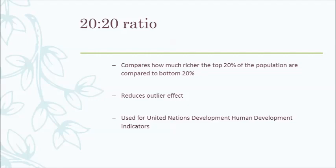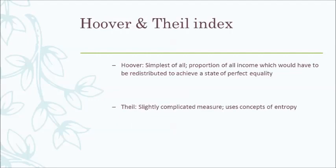One example can be shown from Japan and Sweden, which have a very low inequality gap, where the richest 20% earned only about 4 times that of the poorest 20%. In the UK the ratio is 7 times, and in the US it's 8 times. Two other measures are the Hoover and the Theil indices. The Hoover index is one of the simplest measures — it is the proportion of all income which would have to be redistributed to achieve a state of perfect equality. The Theil index, on the other hand, uses an entropy measure.